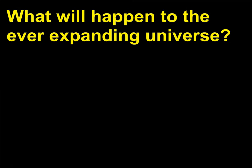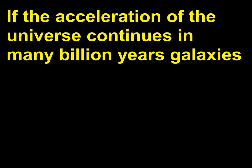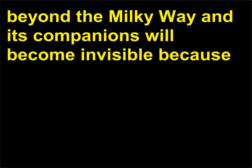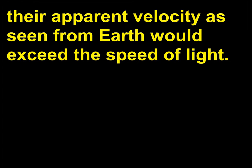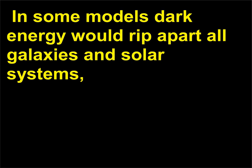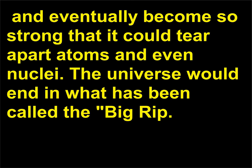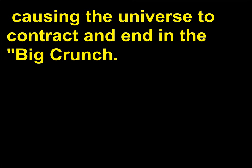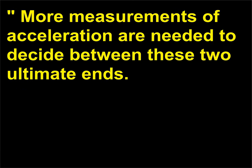What will happen to the ever-expanding universe? If the acceleration of the universe continues in many billion years, galaxies beyond the milky way and its companions will become invisible because their apparent velocity as seen from earth would exceed the speed of light. In some models dark energy would rip apart all galaxies and solar systems, and eventually become so strong that it could tear apart atoms and even nuclei. The universe would end in what has been called the big rip. In other models gravity would again take over, causing the universe to contract and end in the big crunch. More measurements of acceleration are needed to decide between these two ultimate ends.